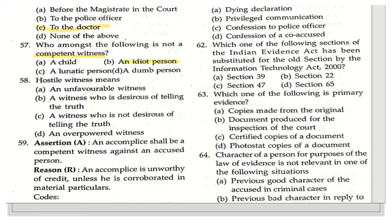The next question asks: what is the meaning of a hostile witness? Section 154 of the Indian Evidence Act deals with hostile witnesses. The options include: an unfavorable witness, a witness who desires to tell the truth, a witness who does not desire to tell the truth, or an overpowered witness. A hostile witness is one who is an unfavorable witness — that is, a person who has already given testimony but has now changed their statement.